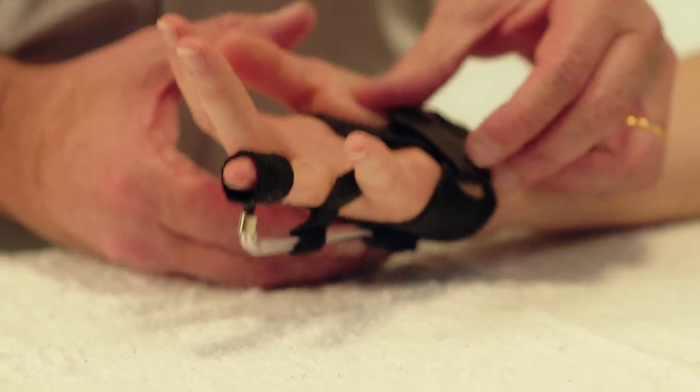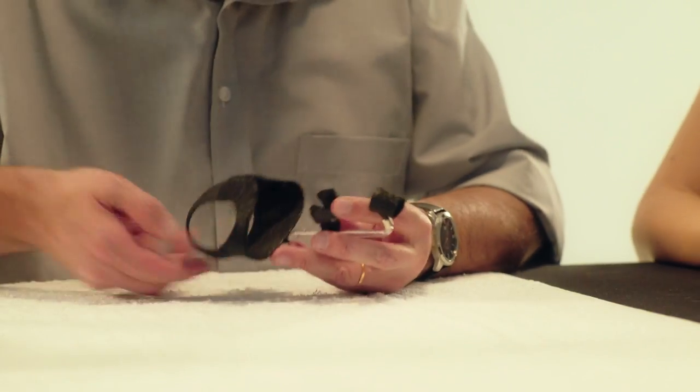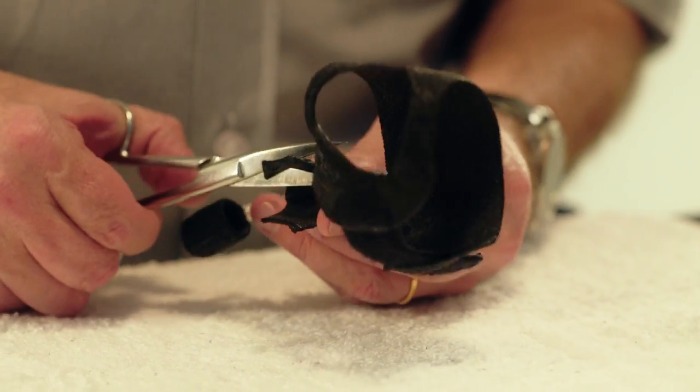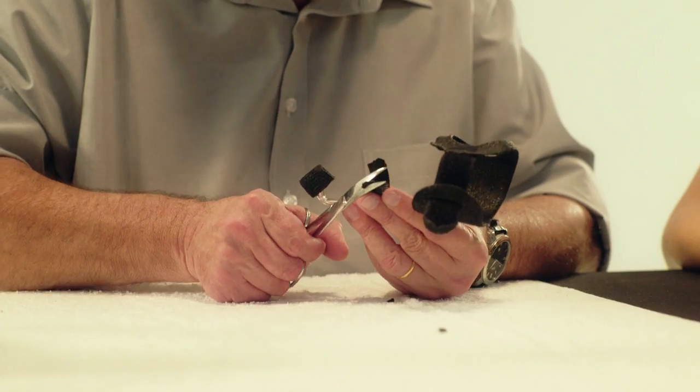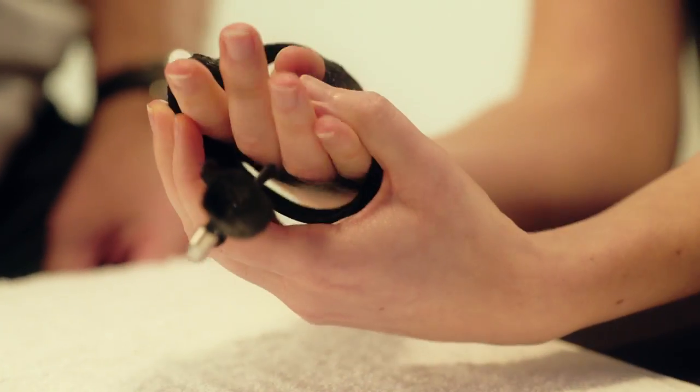Take the orthosis off. Round the edges on both sides of the MCP stop. The orthosis can then be tried on again.